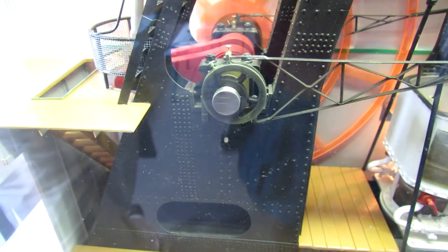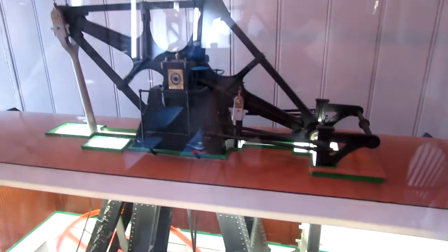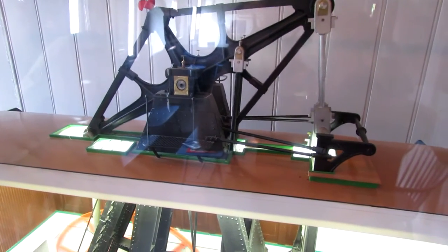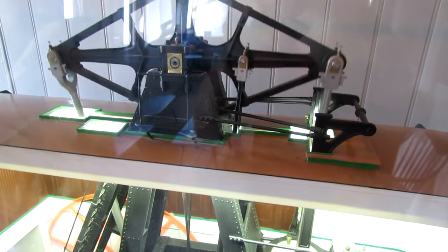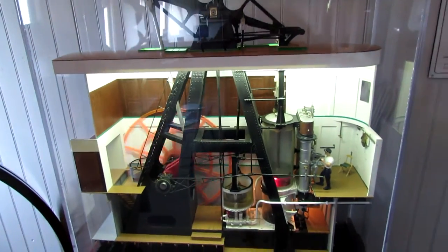The up and down motion of the piston rod connects to the forward end of the walking beam. The walking beam rocks back and forth, transferring the power to the connecting rod and crank that turns the paddle wheels.